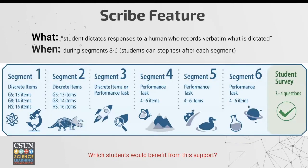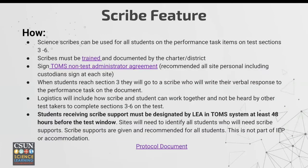What is the scribe feature? A student literally dictates responses to a human who records verbatim what is dictated. This only occurs in segments three through six. Some students will be given more multiple choice items and some students will be given a performance task — it is where you see the performance task that students can then respond verbally and a scribe can write down exactly what they're saying. Think of what students you have that would benefit from having a scribe.